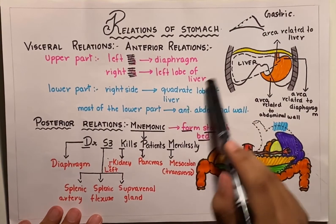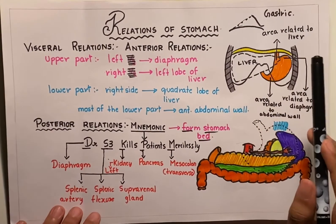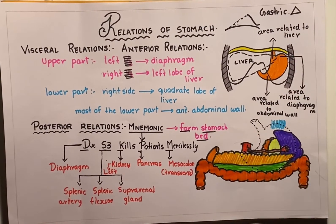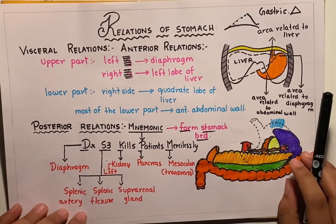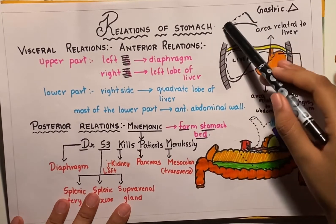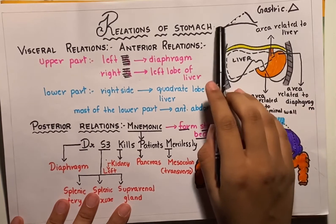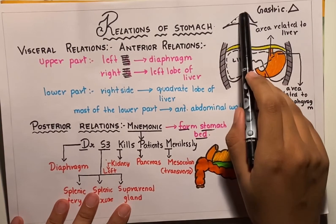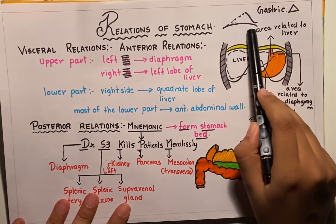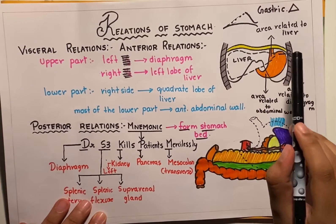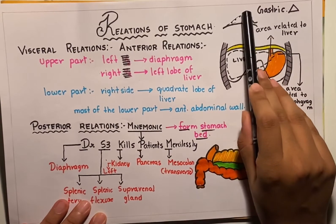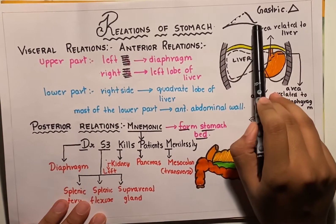The gastric triangle is a triangular region located on the anterosuperior surface, very close to the abdominal wall. It is guarded on the left side by the left costal margin, on the right side by the lower border of the liver, and inferiorly by the transverse colon. This triangular region is used to perform gastrostomy in patients suffering from complete esophageal obstruction, in order to feed the patient.